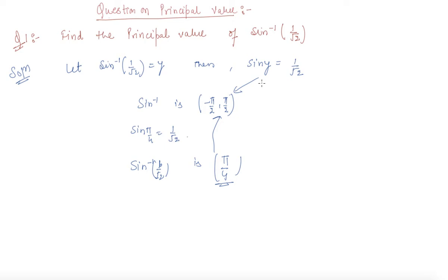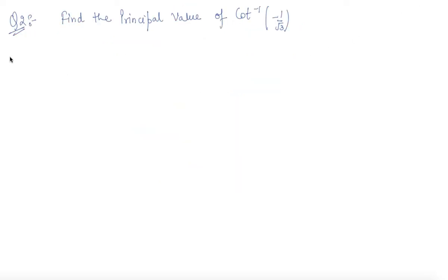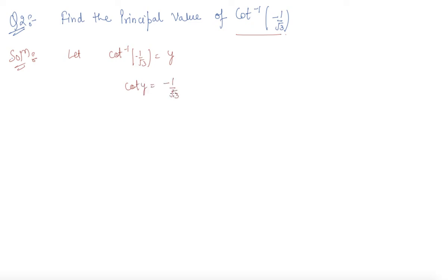Now let's move to question number 2. We need to find the principal value of cot inverse(-1/√3). We proceed using the standard method: let cot inverse(-1/√3) equal y, so cot y equals minus 1 by root 3. We also need to check the principal value branch of cot inverse.